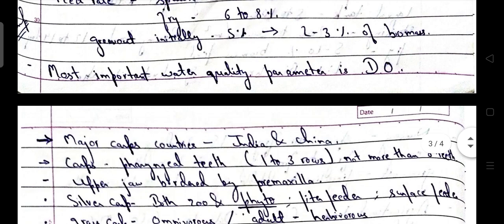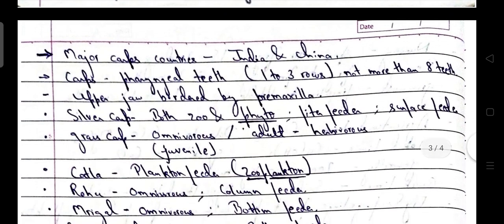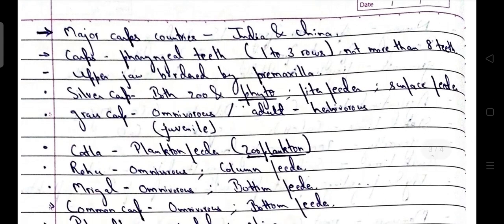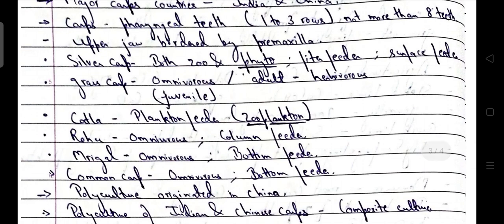The most important water quality parameter is dissolved oxygen. Major carp countries are India and China — India with IMC (rohu, katla, mrigal) and China with exotic major carps (silver carp, grass carp, and common carp). Carps have pharyngeal teeth in 1 to 3 rows, not more than 8 teeth. Upper jaw is bordered by premaxilla. Silver carp feeds on both zooplankton as well as phytoplankton — they are filter feeders as well as surface feeders, mainly feeding on phytoplankton. Grass carp are omnivorous in juvenile stage and herbivorous in adult stage.